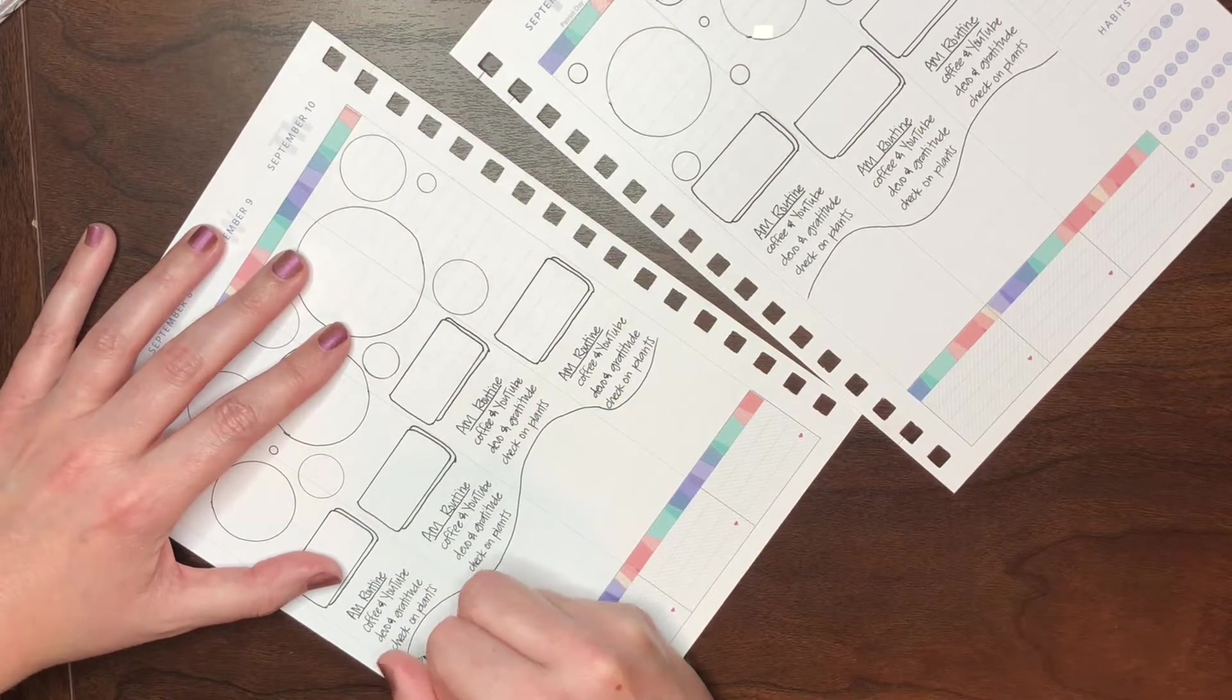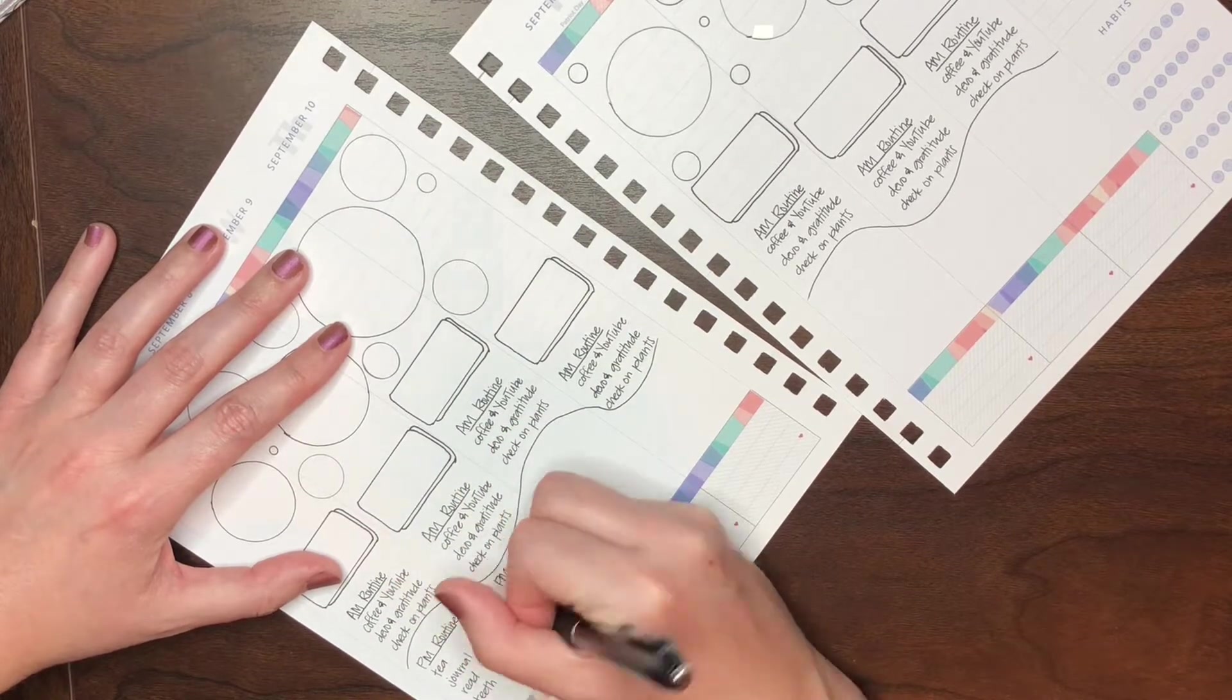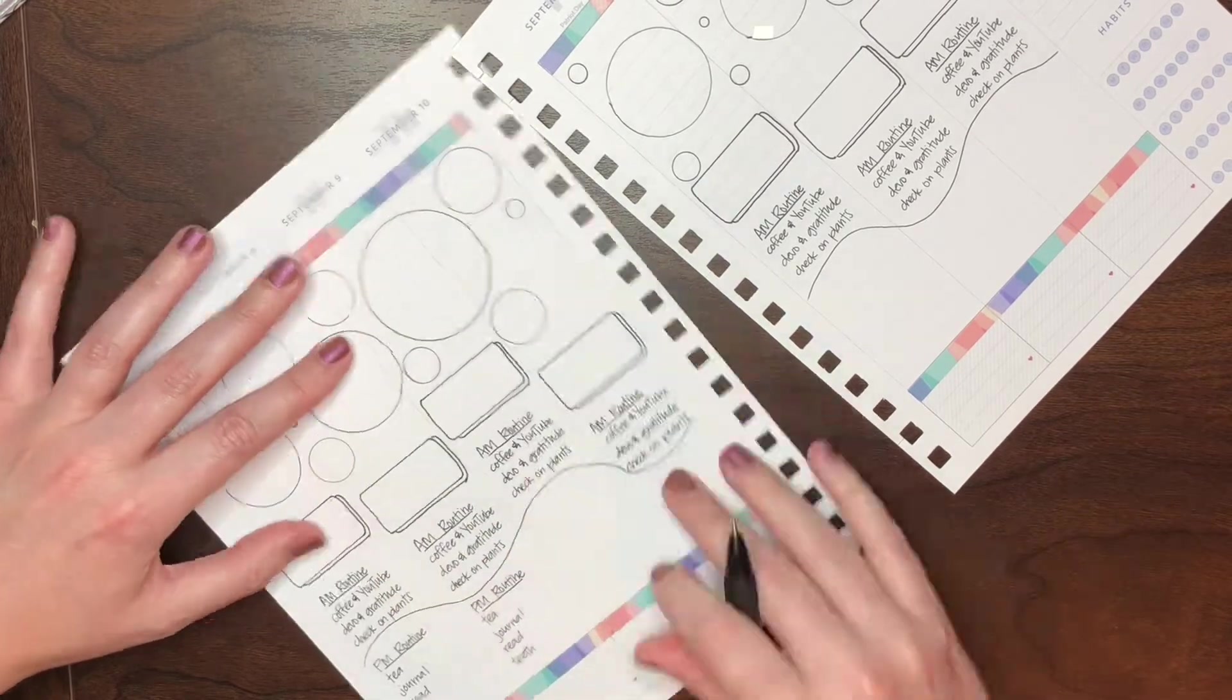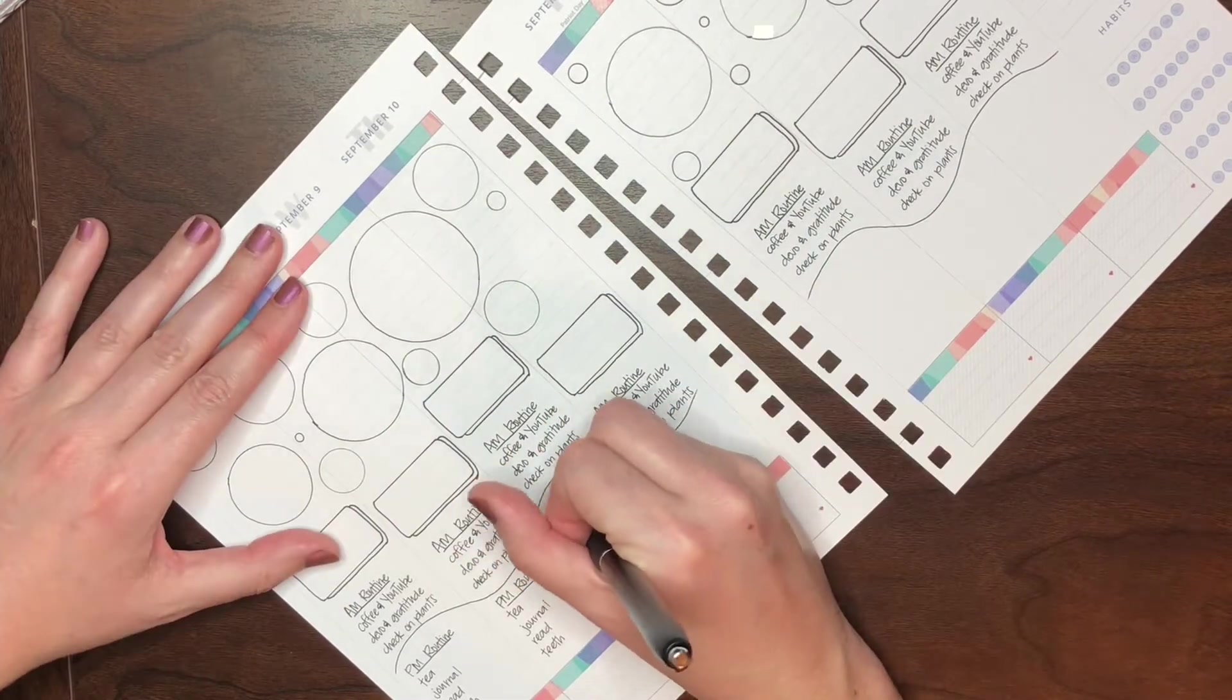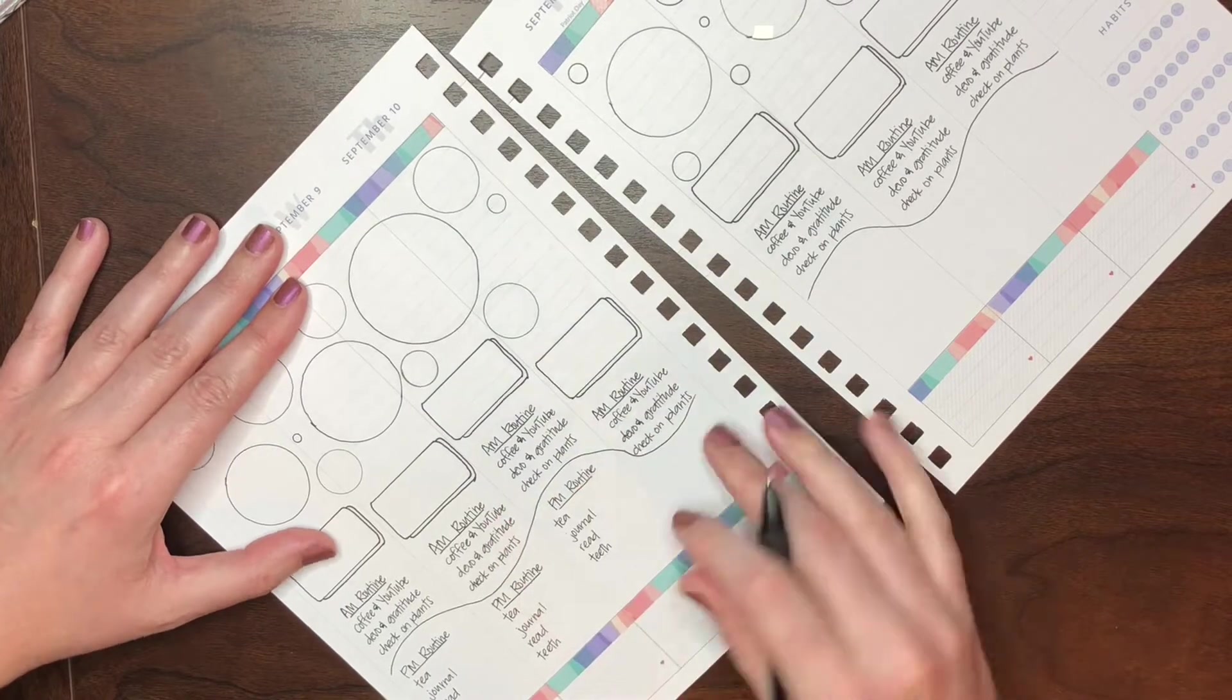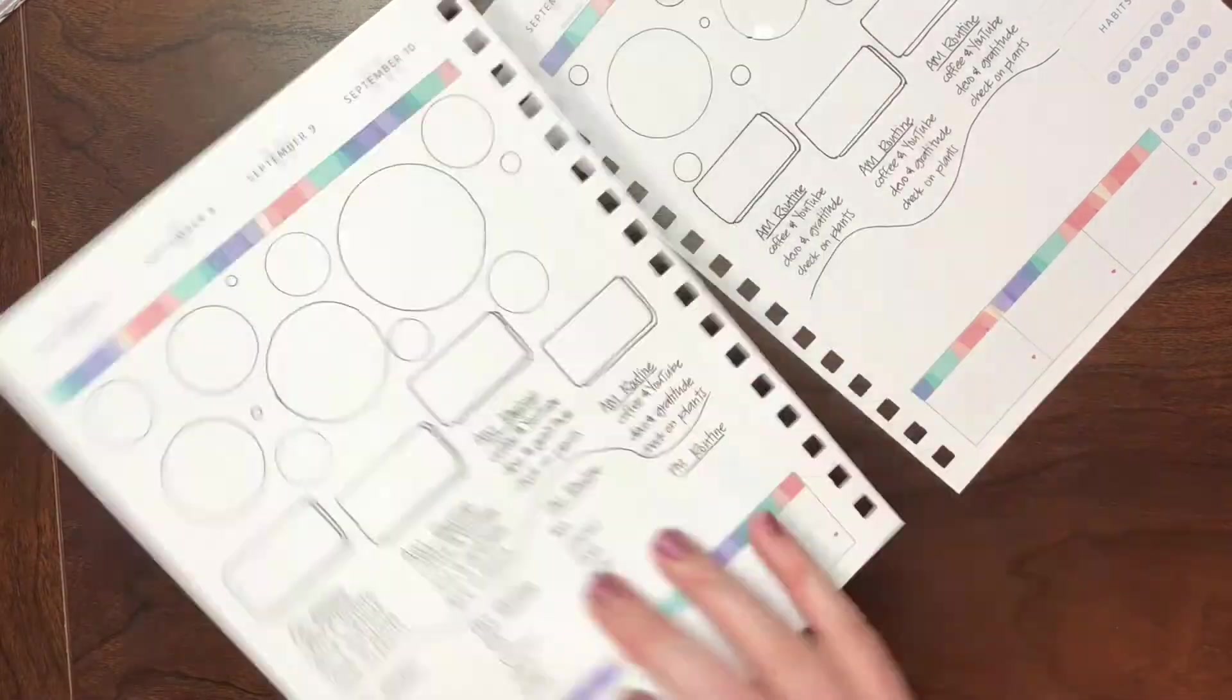So I'm just adding my PM routine. I like to just kind of check my little things off as I do them. I don't do everything every day, so it's okay. You give yourself grace for it. Things like I don't tend to read every single day, but I do need to get into the habit of doing that.